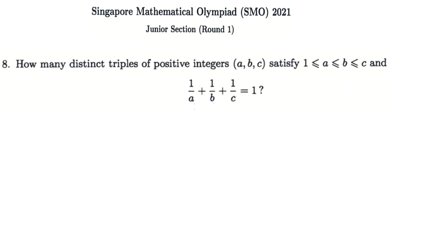1/A + 1/B + 1/C = 1. How many distinct triples of positive integers A, B, C satisfy 1 ≤ A ≤ B ≤ C? This problem is from SMO Singapore Mathematical Olympiad 2021 Junior Section Round 1.